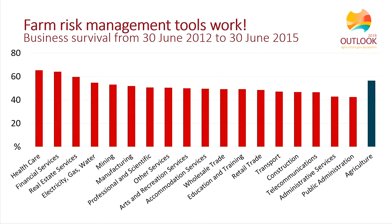Regardless of its source, Australian farmers operate in the presence of substantial risk compared with people in other industries within Australia and farmers in other countries. At least partly because of this exposure, Australian farmers are generally very good risk managers. The main tools they use are having high levels of equity, reserves of liquid assets and borrowing capacity, and diversification across enterprises and locations. When compared with other industries, farms have had one of the highest business survival rates in recent years, even though farming is a more variable industry. This figure shows the proportion of business numbers that remained active between June 2012 and June 2015.